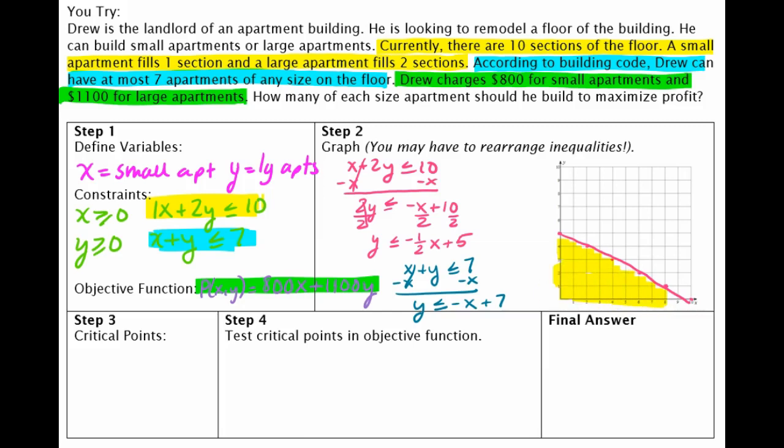Now I'm going to do the line that I solved in blue. So that one, my y intercept is 7. So here's my y intercept here. And then the slope is negative 1. So I'm going to go down 1, right 1. And I'm just going to keep going until I hit the x axis. This one also has a solid line.